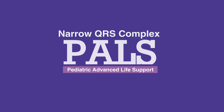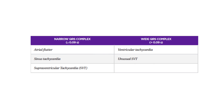Welcome to the lesson on Narrow QRS Complex. Pediatric tachyarrhythmias are first divided into narrow complex or wide complex tachycardia. In this video, we'll discuss the narrow QRS complex tachycardias. Narrow QRS complex tachycardias include atrial flutter, sinus tachycardia, and supraventricular tachycardia, or SVT.